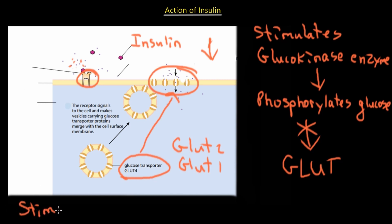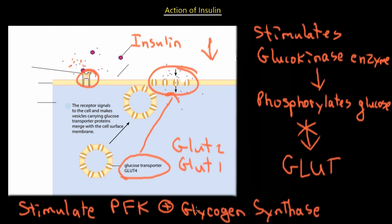Another action of insulin — specifically in the liver — is to stimulate phosphofructokinase (PFK) and glycogen synthase. The stimulation of these two enzymes builds glycogen by adding more and more glucose molecules. This increases storage, and it occurs specifically in the liver, which stores the circulating glucose through the action of these two enzymes, converting glucose to glycogen, our storage unit.